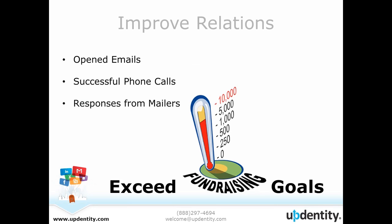Overall, improving relations can help exceed fundraising goals — eliminating the data rot can improve your constituent relations and help your organization exceed these goals. For example, an open email is an opportunity to let your constituents know in a cost-effective way that you're launching a campaign or have an upcoming gala. Successful phone calls — I've heard nonprofits say they don't really call constituents, but why not? It doesn't really cost anything other than the time to pick up that phone, and a successful phone call can really mean a powerful connection between the organization and a potential donor. If your organization sends out mailers requesting donations, you want to be sure you're reaching as many potential donors as possible. There's a substantial amount of value in your database, but if there's missing or outdated info, there's also missing opportunities to connect.